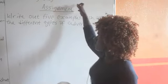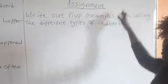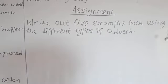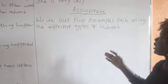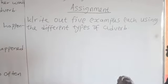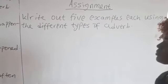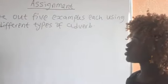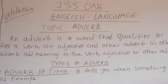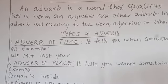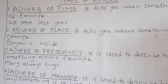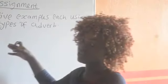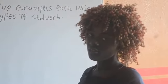To practice what we have been taught, I am going to give you an assignment to do at home. When we resume, you are to submit your assignment. You are to write out five examples each using the different types of adverb — for adverb of time, give me five examples, like 'we met last year.' Adverb of place: five. Adverb of frequency: five. Adverb of manner and degree: five each. Thank you.